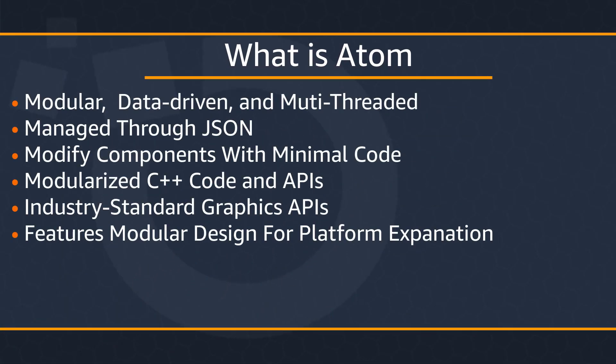The Atom Renderer is designed from the ground up to be modular and easily customized. It's fully multi-threaded to support multiple parallelized workloads. It's entirely data-driven, with almost every feature and configuration defined and managed through JSON files, reducing time spent in recompilation. If a developer wants to customize Atom even further, they can update the modularized C++ code and APIs and recompile just the components they've changed, not the entire renderer.